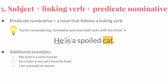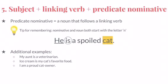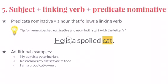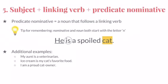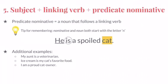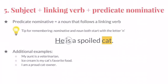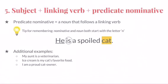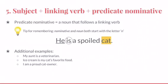Finally, the fifth basic pattern is Subject plus Linking Verb plus Predicate Nominative. A predicate nominative is a fancy term for a noun that follows a linking verb. You can remember that 'nominative' and 'noun' both start with the letter N. To identify linking verbs, you can replace the verb with an equal sign and see if it makes sense. For example, in the sample sentence, 'he equals a spoiled cat' — 'cat' is the predicate nominative. Practice identifying the complete subject, linking verb, and predicate nominative in the additional examples at the bottom of the slide.